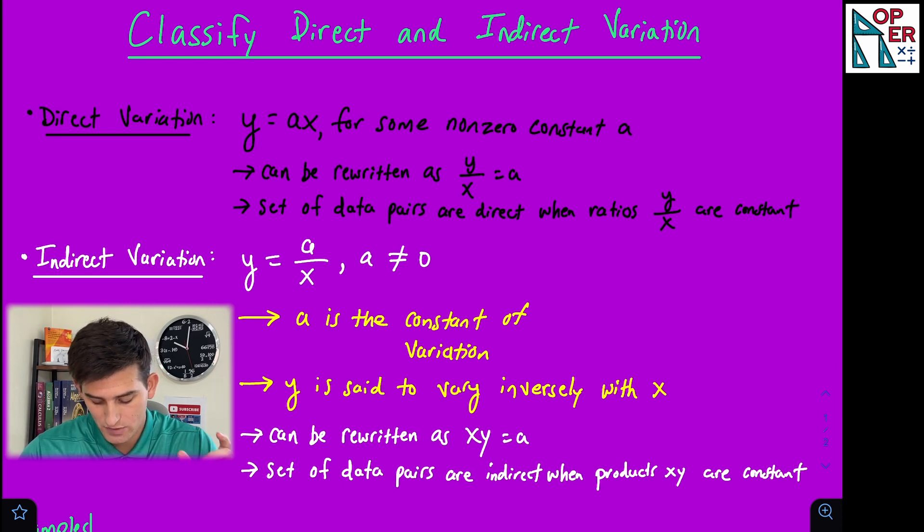A set of data pairs are direct when the ratio y over x are constant. So if we're looking at a table of values, if when we do y divided by x, if those ratios are consistently constant throughout the table, then it would be direct variation.